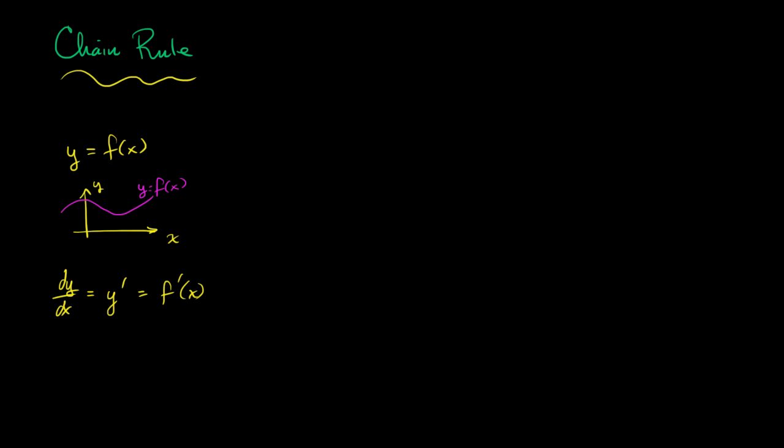We also know that maybe x itself is a function of another variable. So let's say that we're going to set it up so that x happens to be a function of a third variable. Let's call that t.